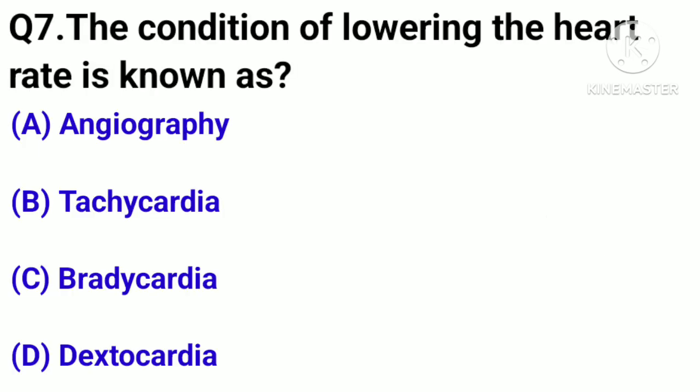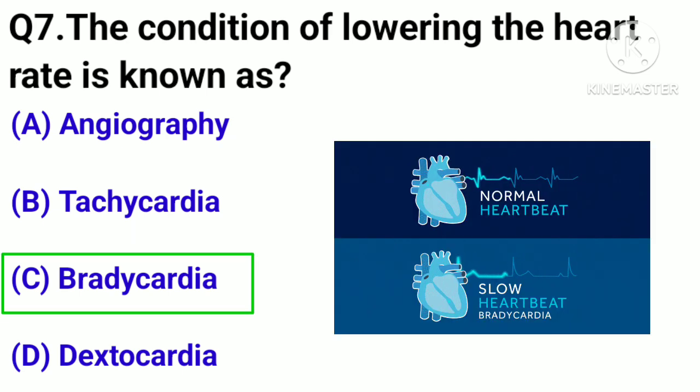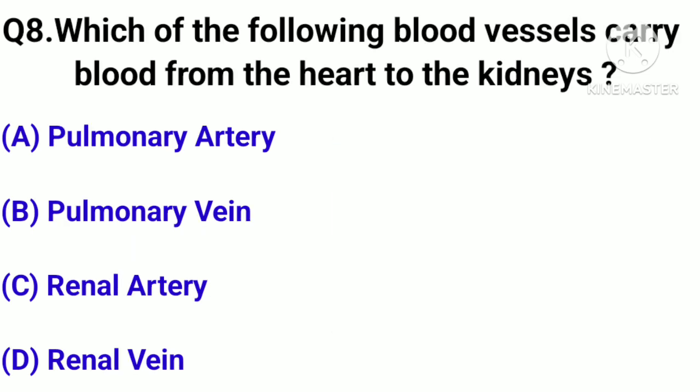Question number 7. The condition of lowering the heart rate is known as? Option A: Angiography. Option B: Tachycardia. Option C: Bradycardia. Option D: Tachycardia. Correct answer: Option C.